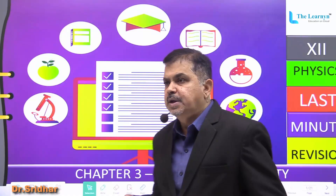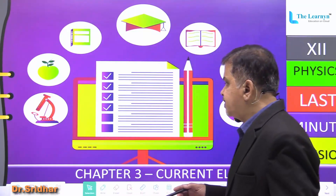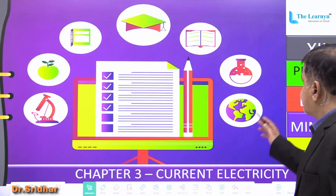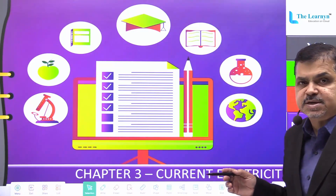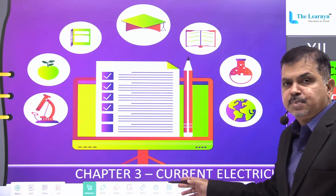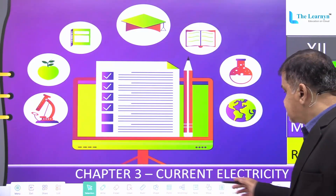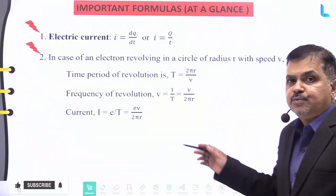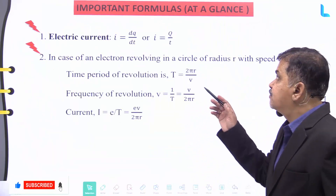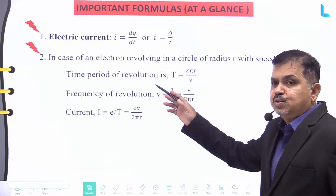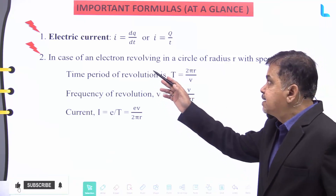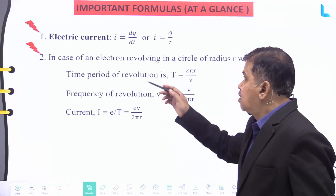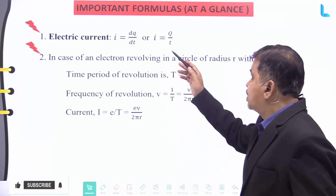Let us do a last minute revision for the subject of Physics for Class 12 CBSE. That is Chapter Number 3 — Current Electricity. Here we have a glance at the important formulas. Number one: electric current I is given by dq divided by dt, or I equal to q by t.